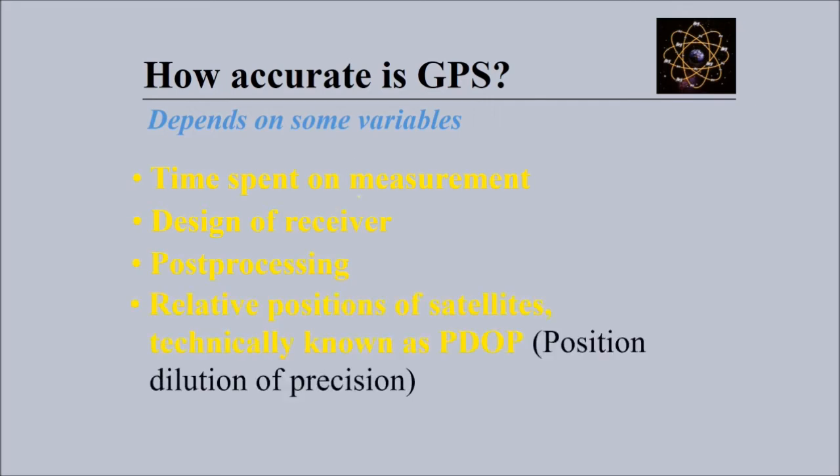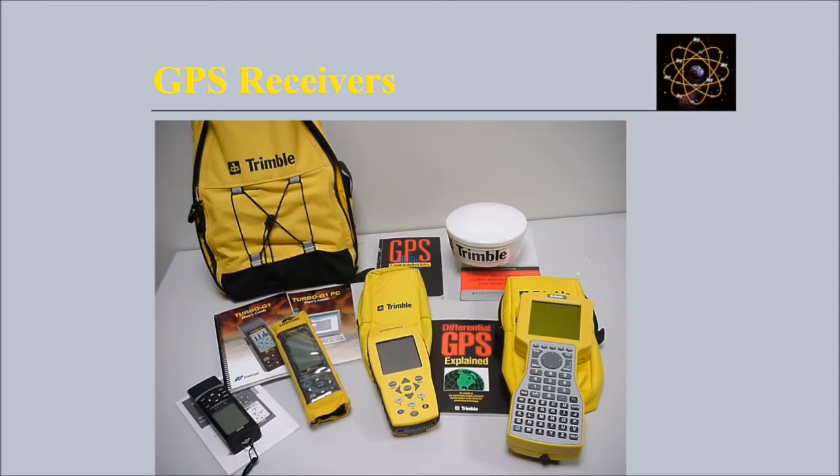It depends on certain variables: the time spent on the measurement, the design of the receiver, the post-processing after data has been received, and the relative position of the satellites - technically known as PDOP, the Position Dilution of Precision.